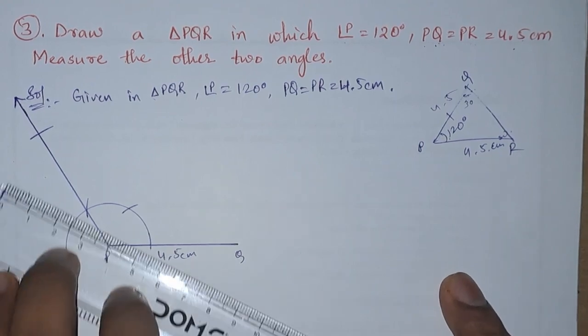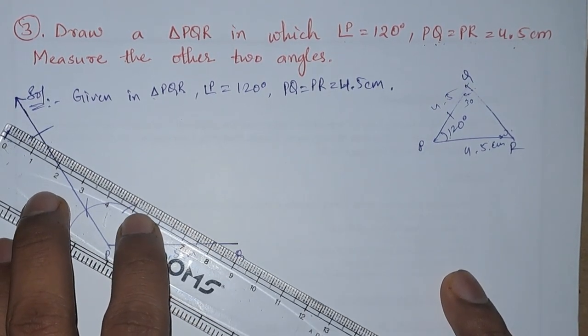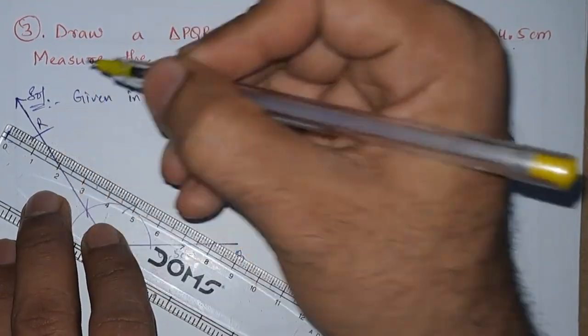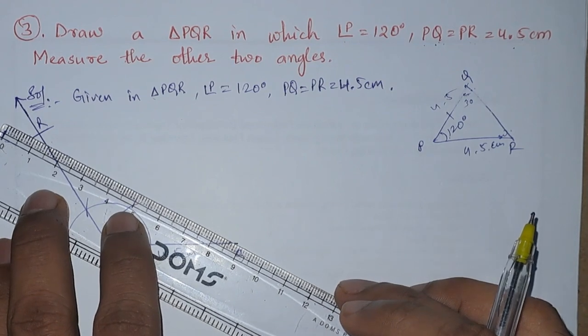Now let us join these two points. So this one is R. R to P we need to join.